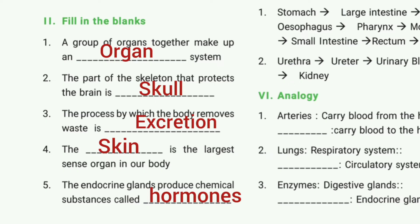Then fill in the blanks. First one: a group of organs together make up an blank system. The answer is organ system. Second one: the part of the skeleton that protects the brain is blank. The answer is skull. Third one: the process by which the body removes waste is blank. The answer is excretion.